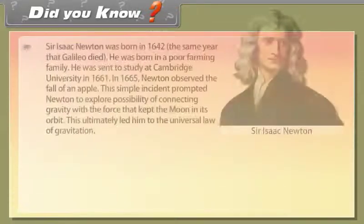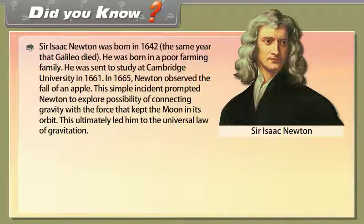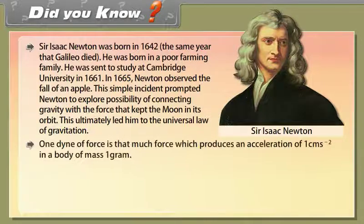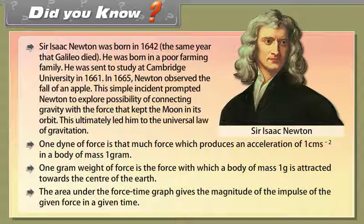Did You Know: Sir Isaac Newton was born in 1642, the same year Galileo died. He was born into a poor farming family and was sent to Cambridge University in 1661. In 1665, Newton observed the fall of an apple, which prompted him to explore the connection between gravity and the force keeping the moon in orbit, leading to the universal law of gravitation. One dyne of force produces an acceleration of 1 cm/s² in a body of 1 gram. The area under a force-time graph gives the magnitude of impulse.